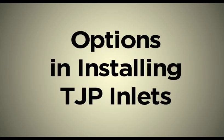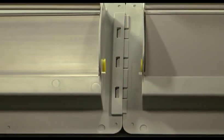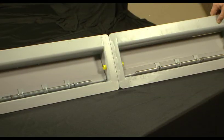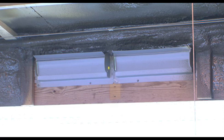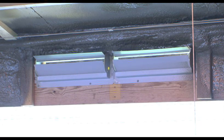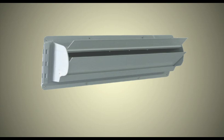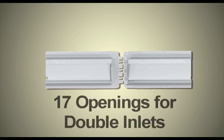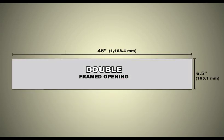TJP inlets are designed to give you the option of snapping two inlets together and installing a double inlet into one location. If you install double inlets, you only need to install half the number of openings. For example, if you calculate that you need to install 34 inlets into a poultry house, you only need 17 openings. Keep in mind that double inlets will need a larger opening during installation.